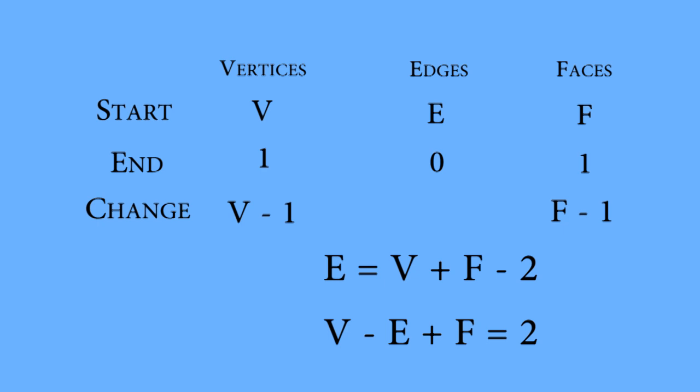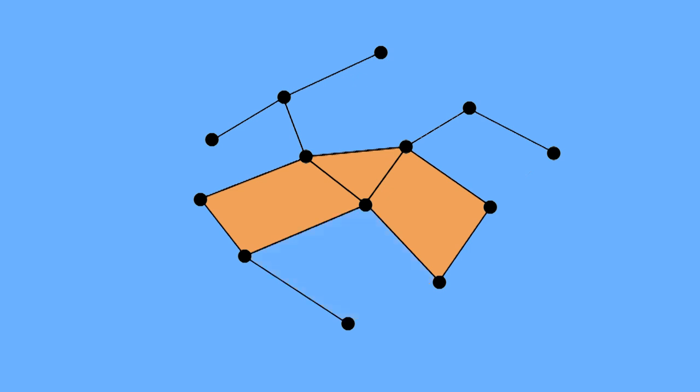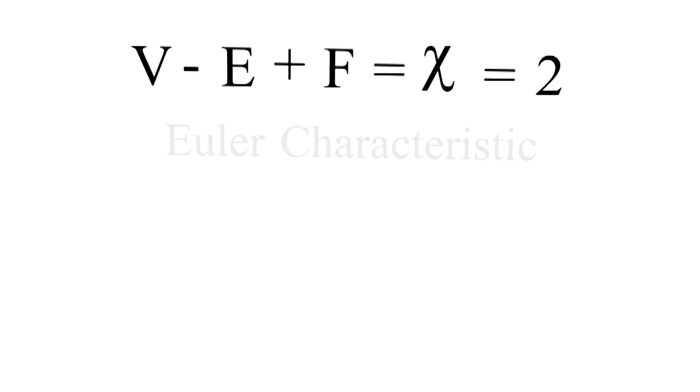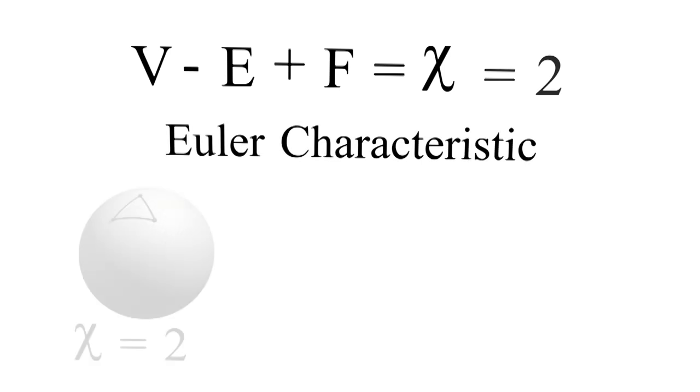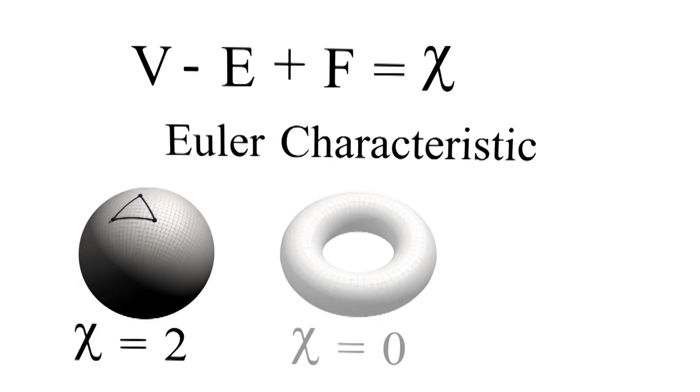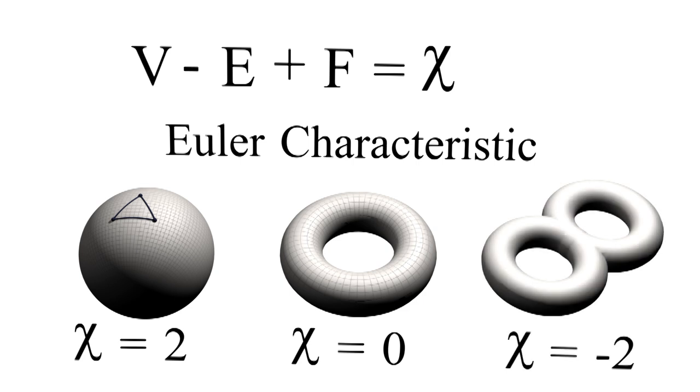And this equation remains true even as we changed the number of vertices, edges and faces. V minus E plus F is called the Euler characteristic. The characteristic is two for spheres, but it's zero for donuts and negative two for double donuts.